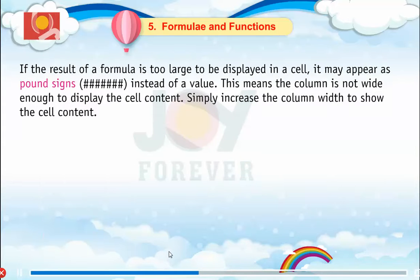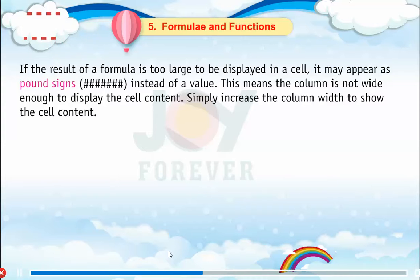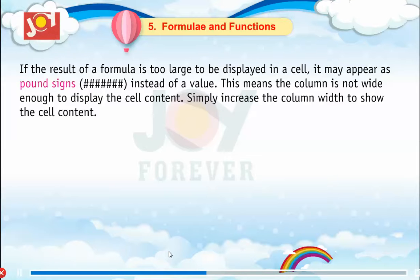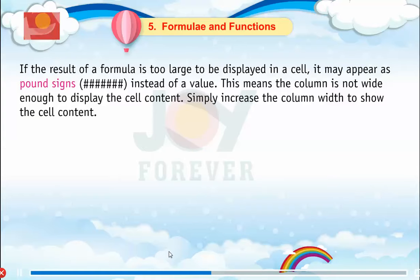If the result of a formula is too large to be displayed in a cell, it may appear as pound signs instead of a value. This means the column is not wide enough to display the cell content. Simply increase the column width to show the cell content.